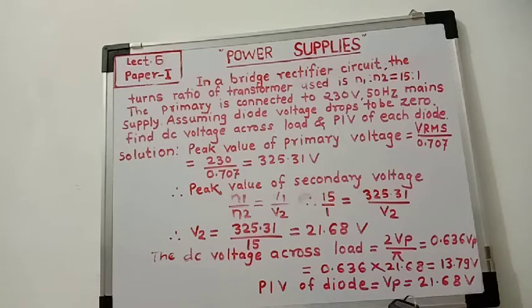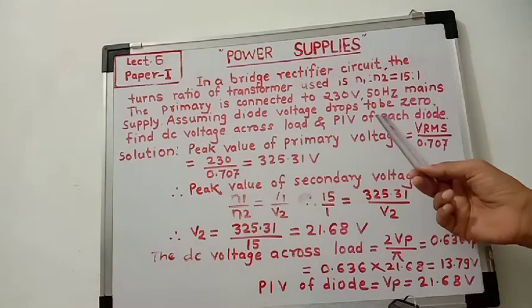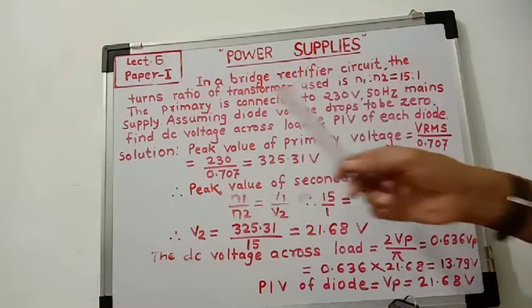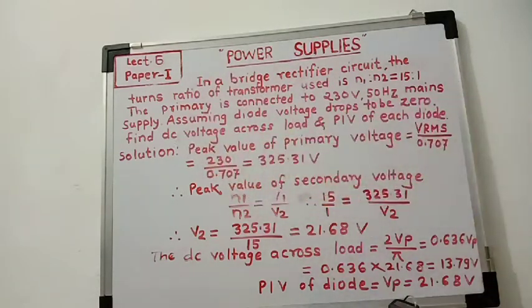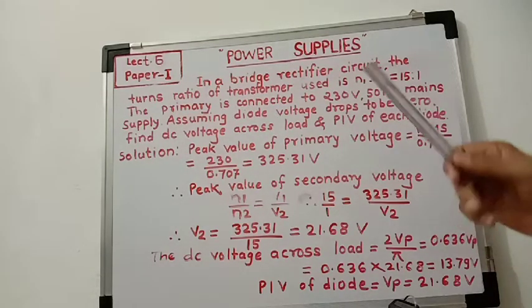So we have to find out the PIV of each diode and the DC voltage across the load, that is VDC. See the solution.